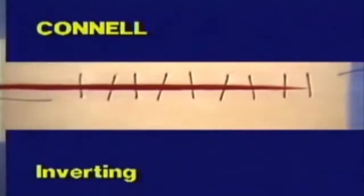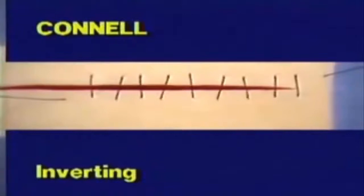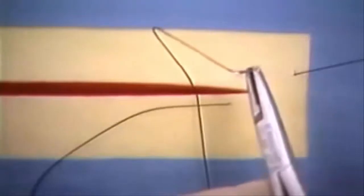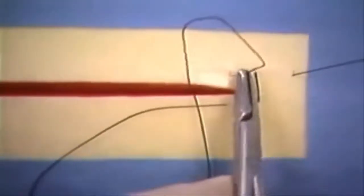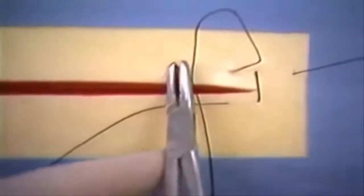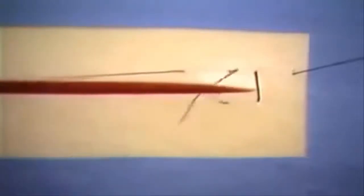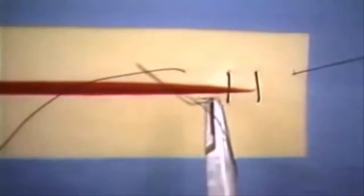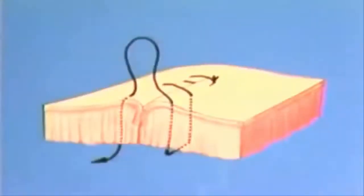The Connell suture pattern is also an inverting suture pattern. The Connell pattern differs from the Cushing's in that the suture penetrates all layers of the wall into the lumen with each needle bite. This illustration shows a completed Connell suture pattern.